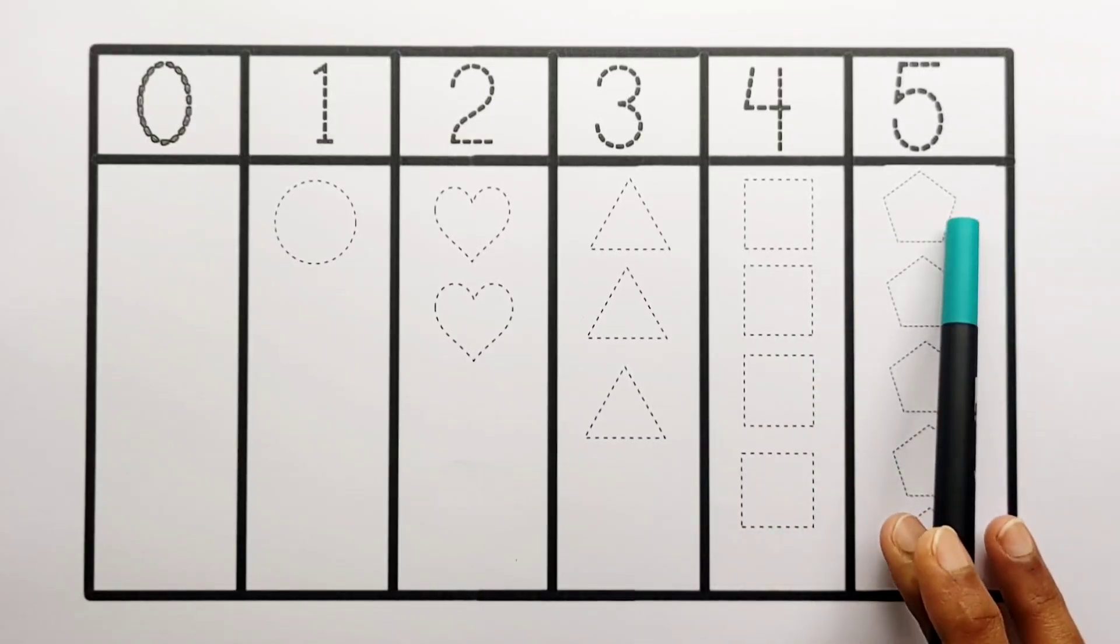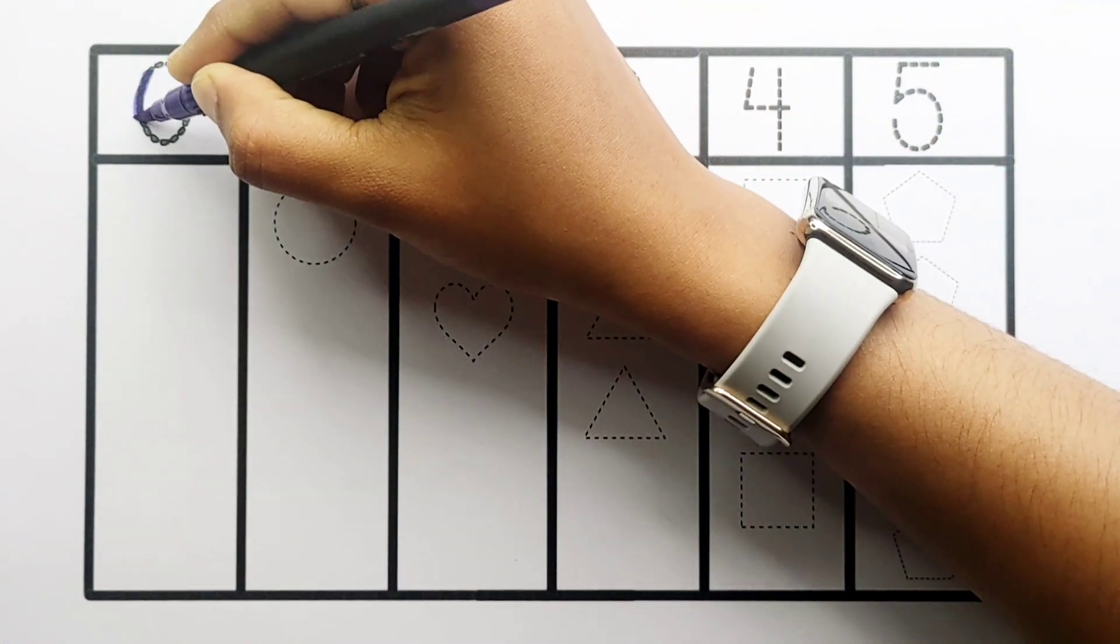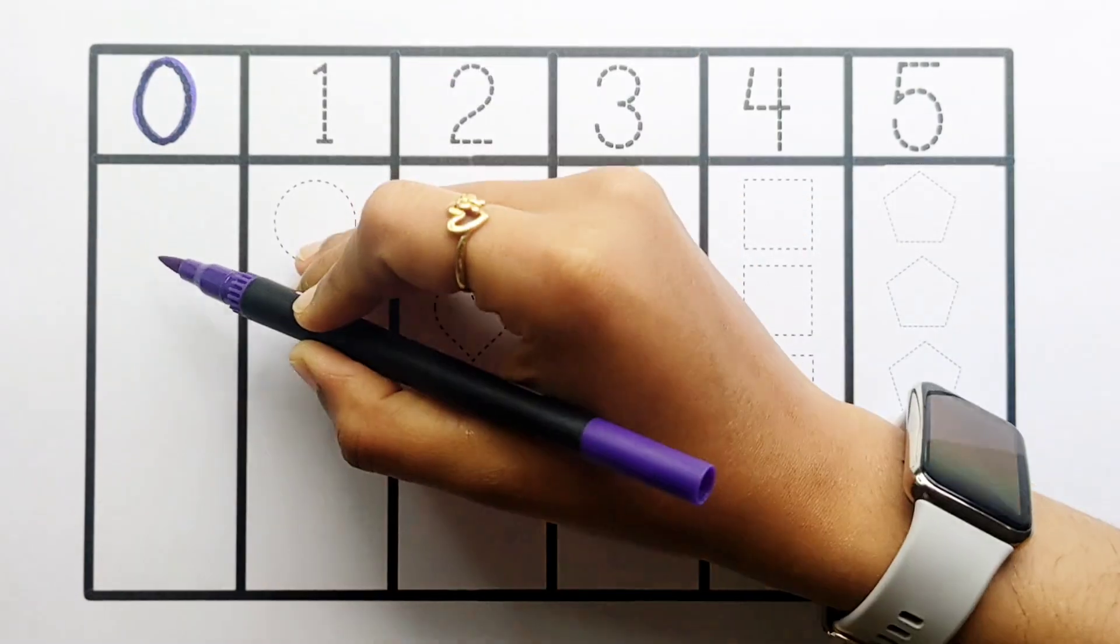Four squares. Five: one, two, three, four, five - five pentagons. Zero - zero shapes.